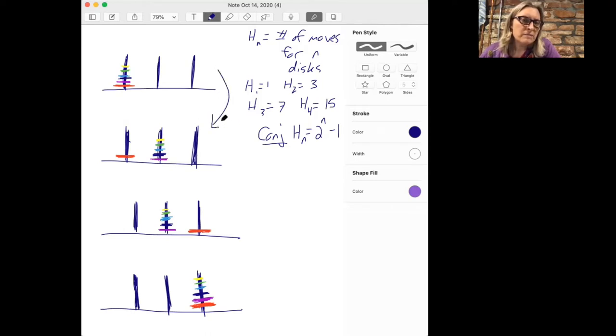So it takes h_5 steps to move five disks from one peg to another. Then we need one move to move the biggest disk. And then you need h_5 disks, h_5 moves to move five disks onto the biggest disk.